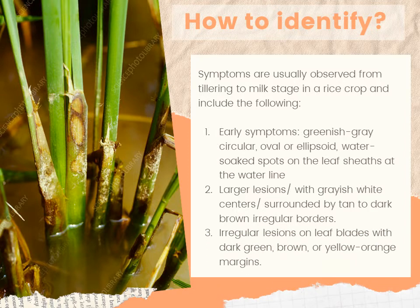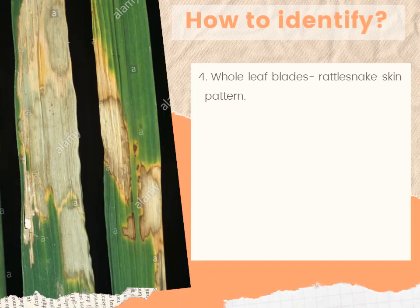Infection can spread to leaf blades and cause irregular lesions with dark green, brown, or yellow-orange margins. The lesions can develop and coalesce on portions or whole leaf blades, which may produce a rather snakeskin pattern.